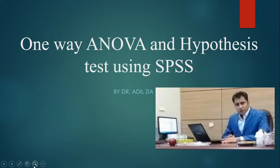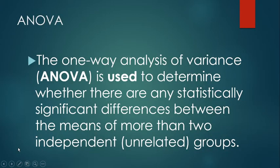Hello everyone. In my last video you have seen how we can do the t-test analysis, and in this video today we will see how to do ANOVA tests. ANOVA is known as the analysis of variance and it is used to find if there is any significant difference among more than two independent unrelated groups.